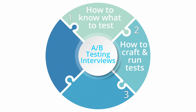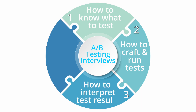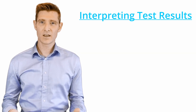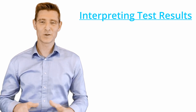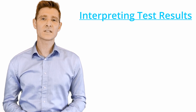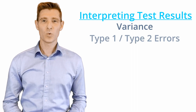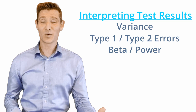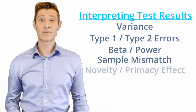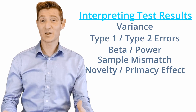The next category of A-B testing questions is how to interpret tests properly. This is where people get stuck because there are so many nuances in statistics. You need to understand things like: what is variance, what is natural variance, what is a type 1 error versus a type 2 error, what is beta, what is power, what is a sample ratio mismatch, and what is the difference between novelty effect and primacy effect. They might describe a scenario — say, your test results are declining after a couple of weeks and merging towards the control — and you need to know to talk about primacy effect or novelty effect.